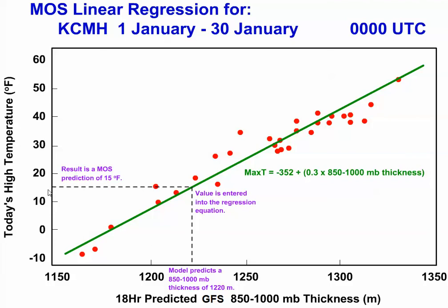I should note that this particular sample of one month of data is too short to actually compute a statistically significant linear regression equation — you need a much larger sample of several years of data. Of course, real MOS equations also use more than one predictor from dynamic model output in order to forecast high temperature or any other variable.